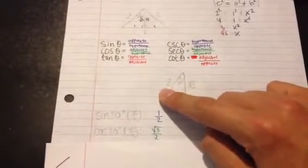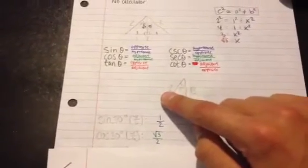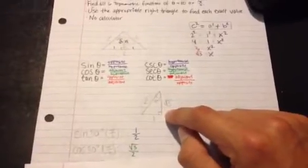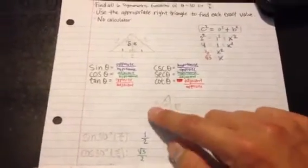Cosine of 30, or pi over six, is the adjacent side over the hypotenuse. So adjacent over hypotenuse, which is square root of three over two.